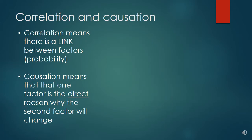Now we're going to talk about correlation and causation. A correlation means there's a link between factors — if one factor changes, there's a probability that another factor will change, meaning those two factors are linked together. A causation means that if one factor changes, it would directly affect the second factor; it is deemed to be the cause of the change in the second factor.